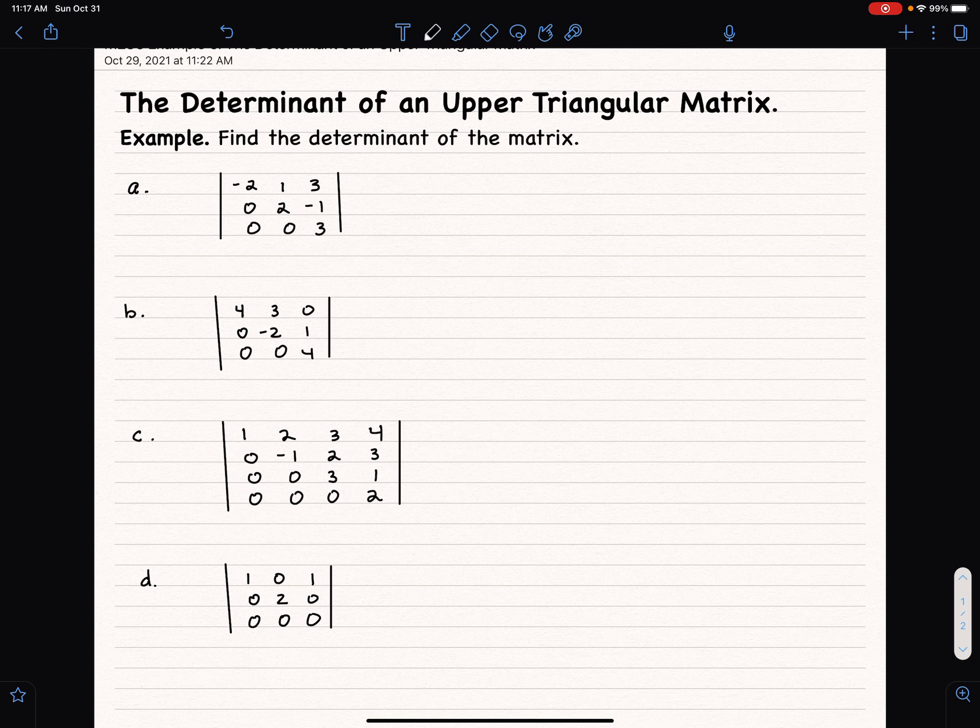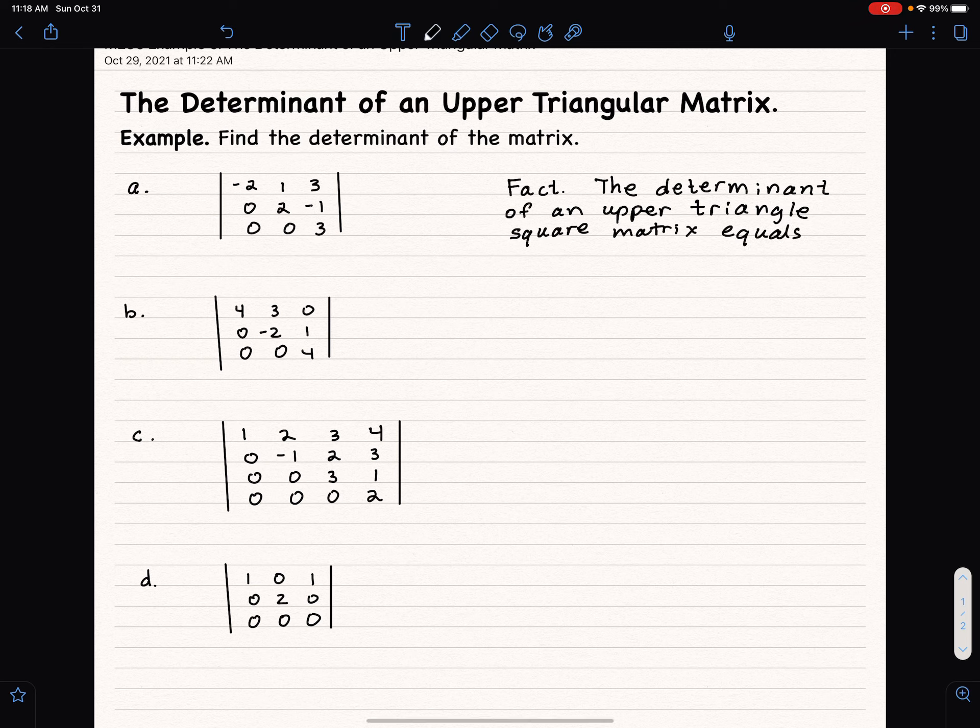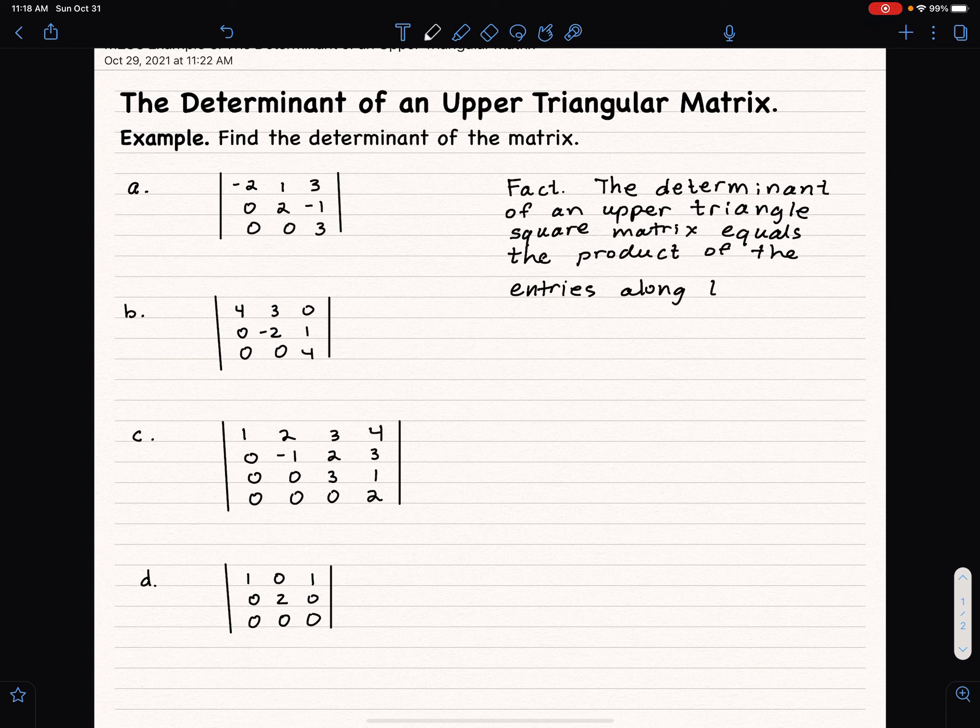We are going to begin with a fact, which is the following. The determinant of an upper triangular matrix. Now, hold on. Should I say upper triangular square matrix? The matrix has to be square anyway for the determinant to make sense, but I'll say that. That upper triangular square matrix equals the product of the entries along the main diagonal.